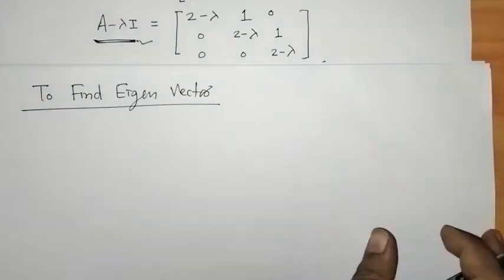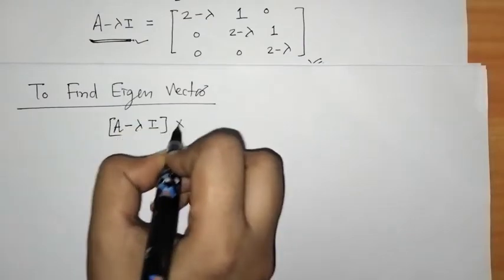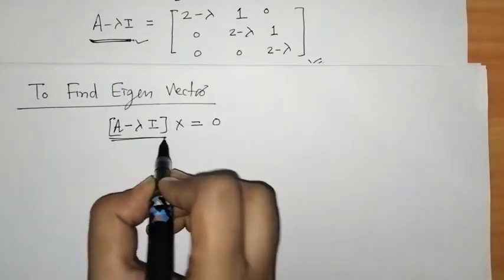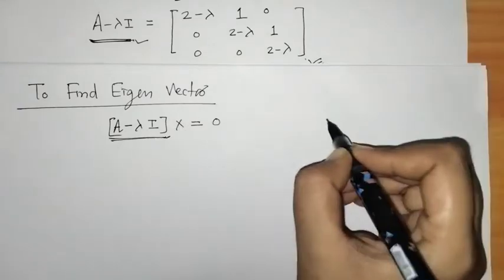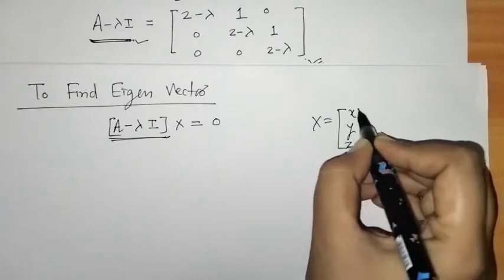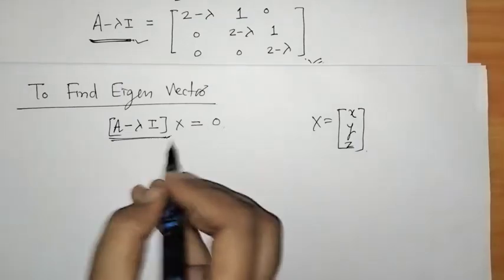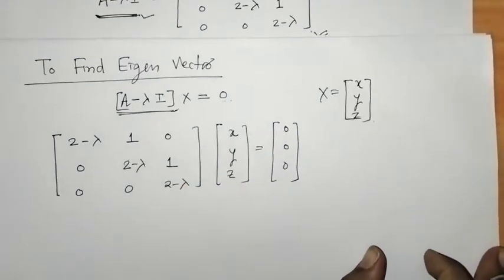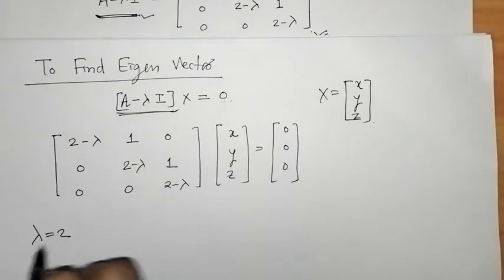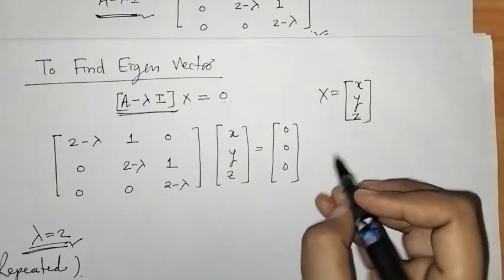To find the eigenvectors we use the matrix equation A minus lambda I times x equals zero, where x is the eigenvector containing unknowns x, y, z, and 0 is the null vector. We substitute all these values and find the eigenvector for eigenvalue lambda equals 2, which is the repeated eigenvalue.